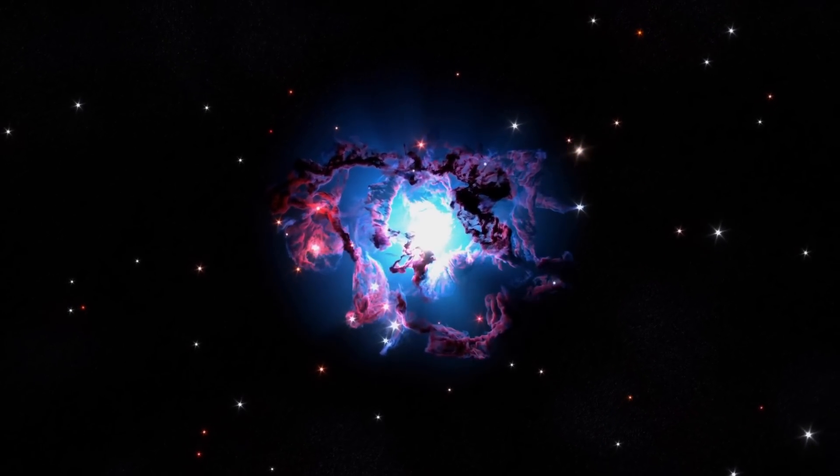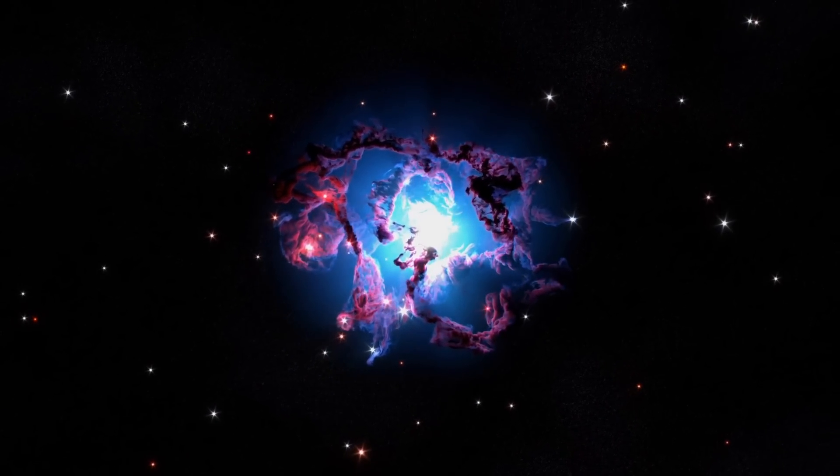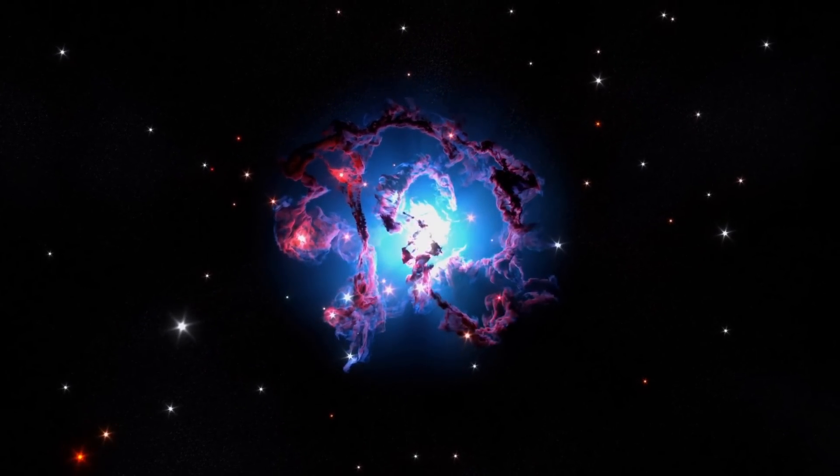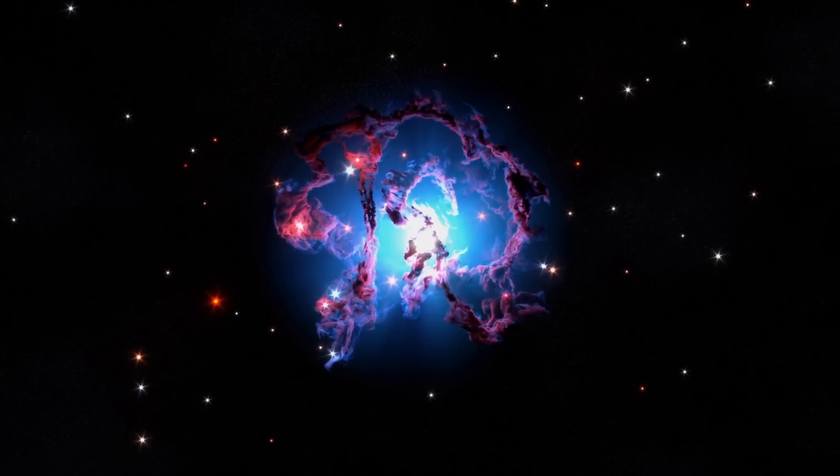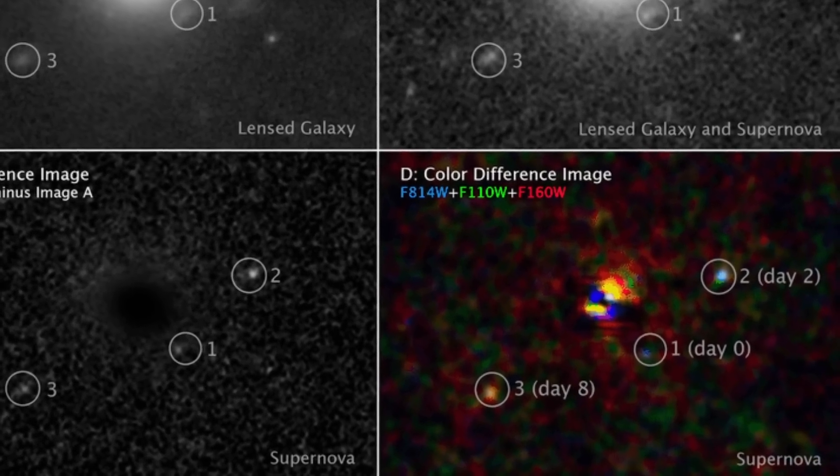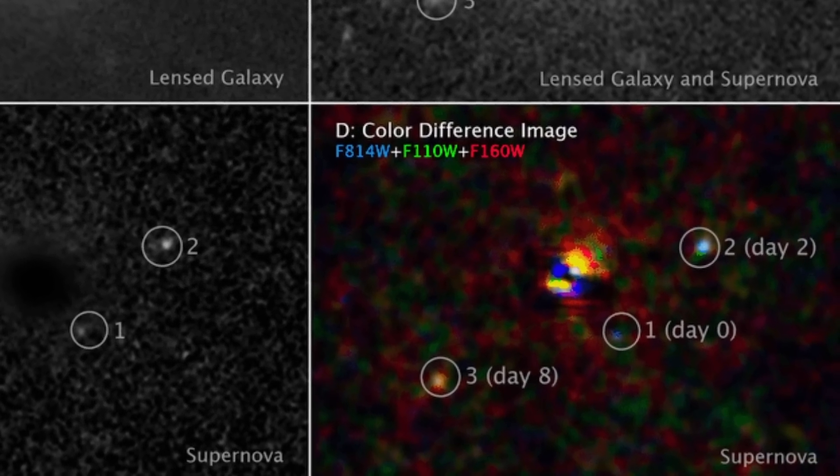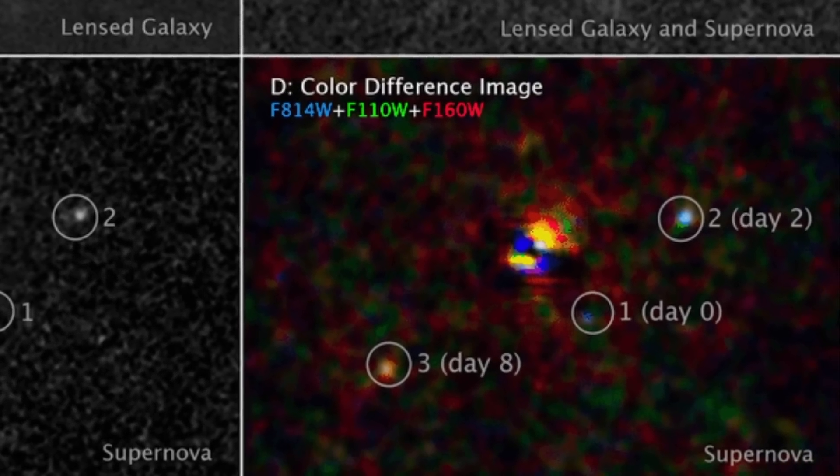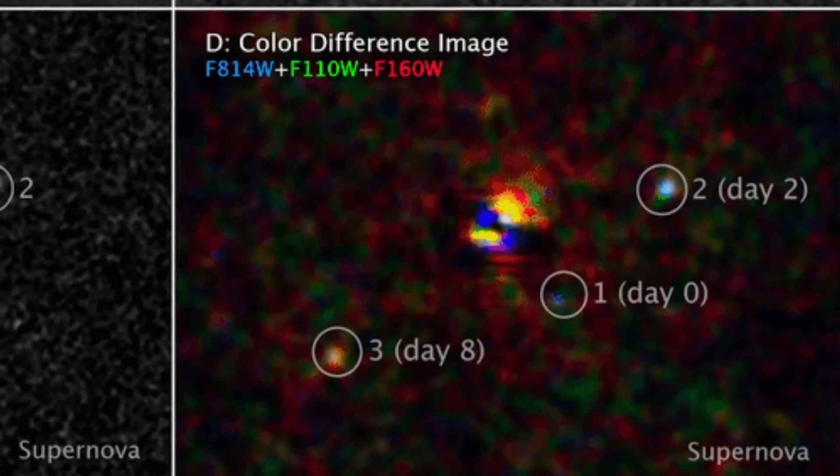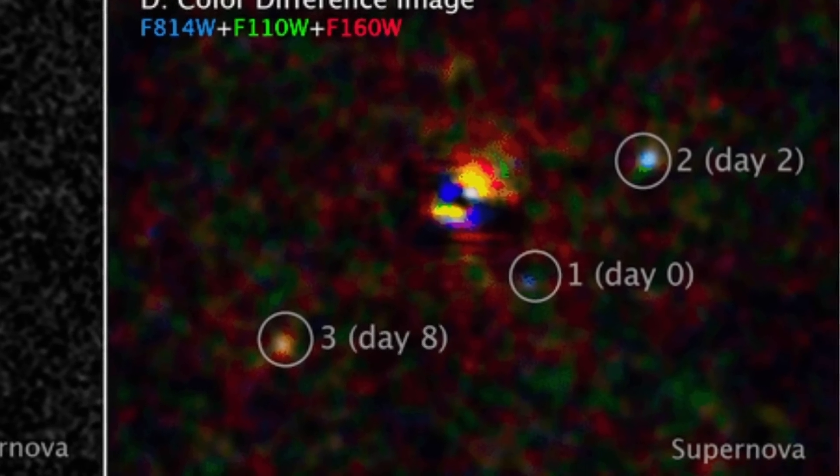In this case already showing us that this particular supernova changed color over time, with the blue colors being seen during very hot periods, then changing into red colors a few days later. With all of this roughly taking approximately a week.